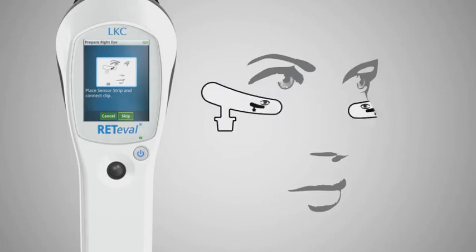Using the simple clip connector, attach the RedEval device to one of the sensor strips as shown by the graphic on the device display.